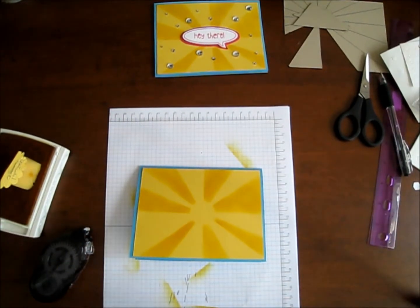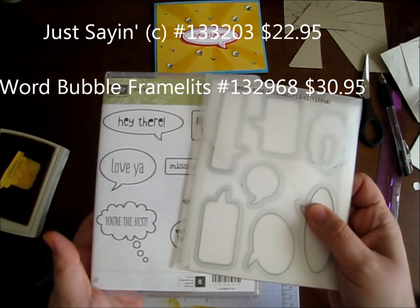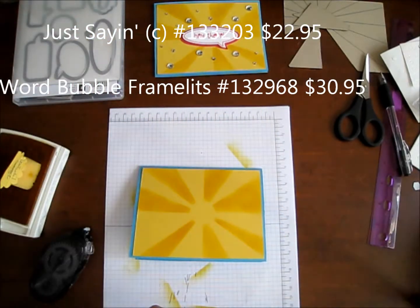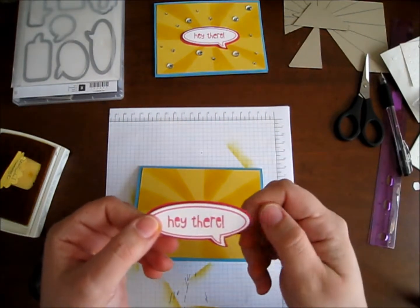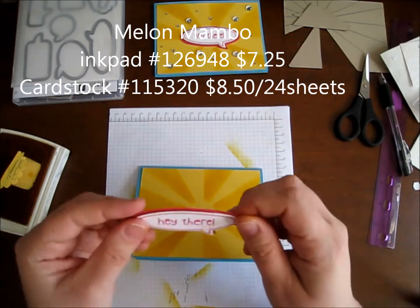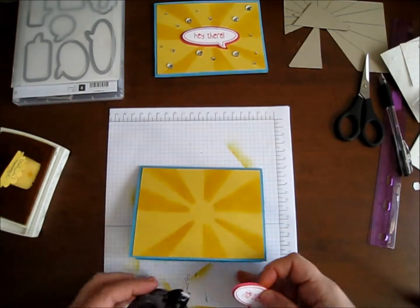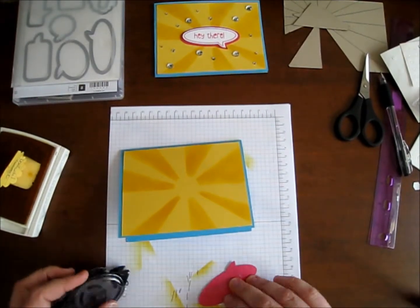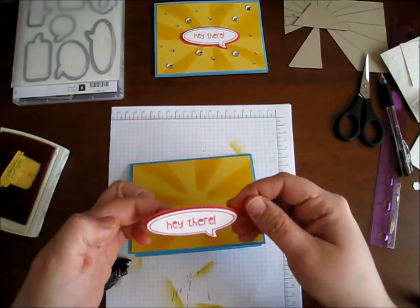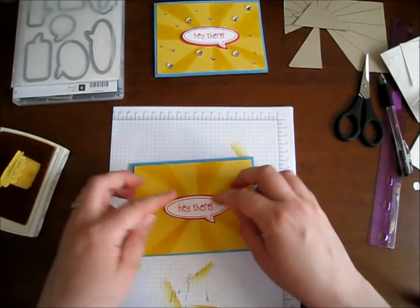And then what I've done is I've used the Just Sayin' stamp set and the framelits that go with it, the Word Bubbles framelits, for the front of the card. And I've used the Hay There in Melon Mambo. Cut it out in the big shot. And then I put it on a piece of Melon Mambo cardstock. I just free-handed to get the lip around. No special doodad there. I did put some Stampin' Dimensionals underneath the white just to kind of pop it off the Melon Mambo piece of cardstock.